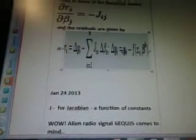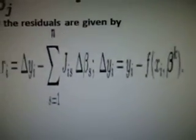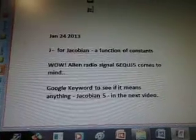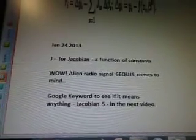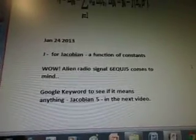Let me make it a little bigger for you to see. Just a wee bit bigger. Okay. January 24th, J is for Jacobian, a function of constants. Okay, wow. Alien radar signal 60QUJ5 comes to mind. I'm going to Google the keyword to see if it means anything. Jacobian 5 in the next video.